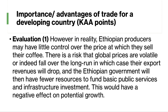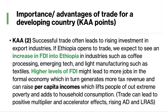However, in reality, Ethiopian producers may not have much control over the price at which they sell their coffee. Perhaps Ethiopian producers are essentially price takers in the world market. And there is a risk that global prices are volatile, unpredictable, or indeed fall over the long term. Perhaps the price of coffee declines in real terms — maybe more countries start growing coffee, the real price comes down — in which case their export revenues will drop. The Ethiopian government will therefore have fewer resources to fund their basic public services and infrastructure. So the danger is that if Ethiopia emphasises too much one crop or one product, if revenues go down, growth will suffer because the Ethiopian government won't have the tax revenues coming in to fund their essential investments.